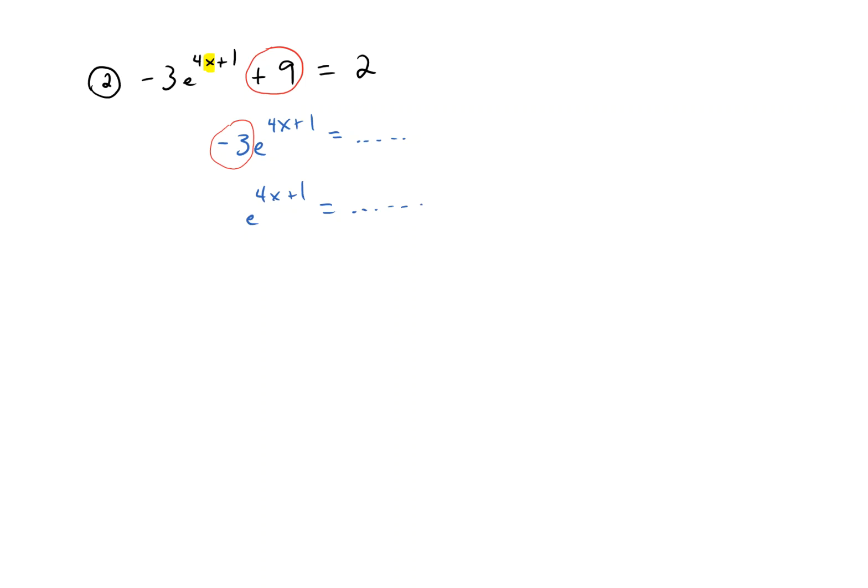The next layer you want to remove is the exponential in base e. How do you undo an exponential in base e? Whatever you do to it on the left side, make sure to do the same thing on the right side, and at that point you'll have 4x plus 1 equals something. Okay?